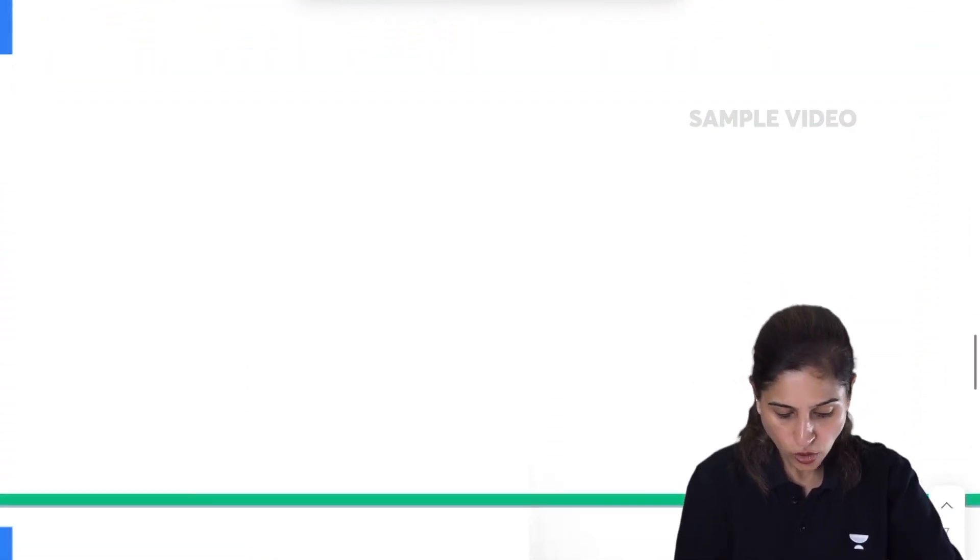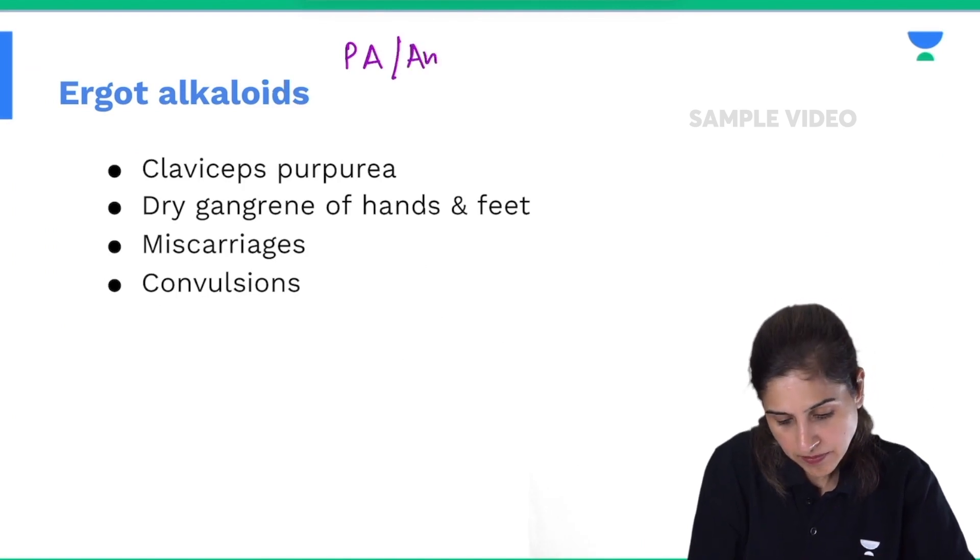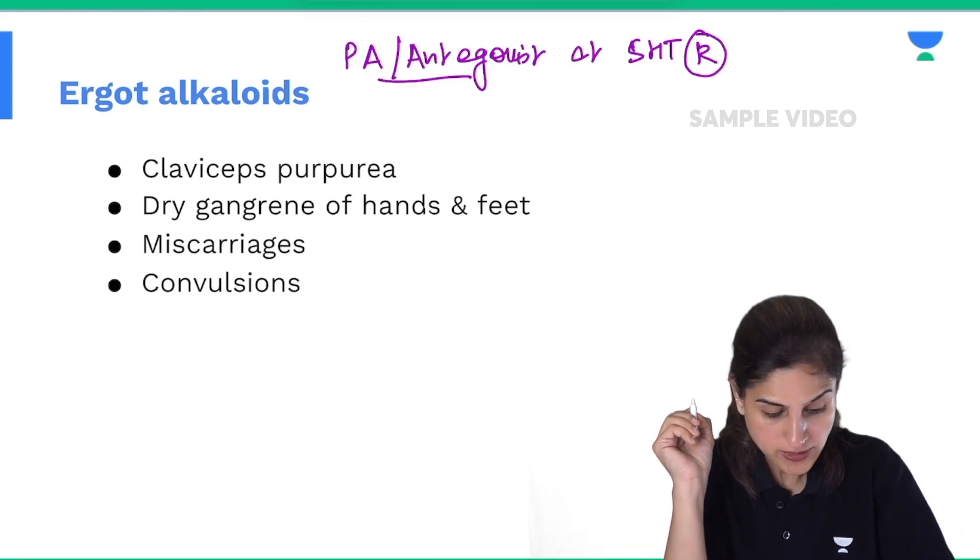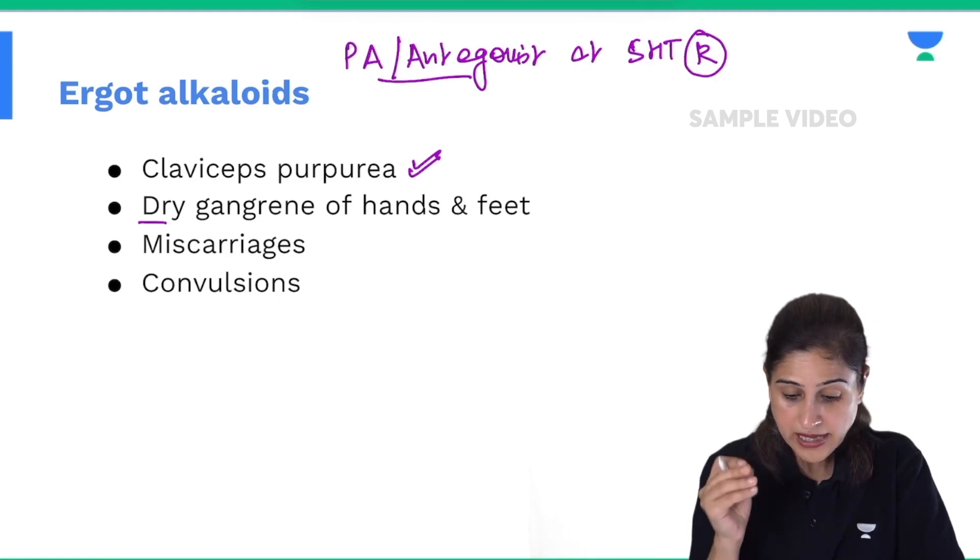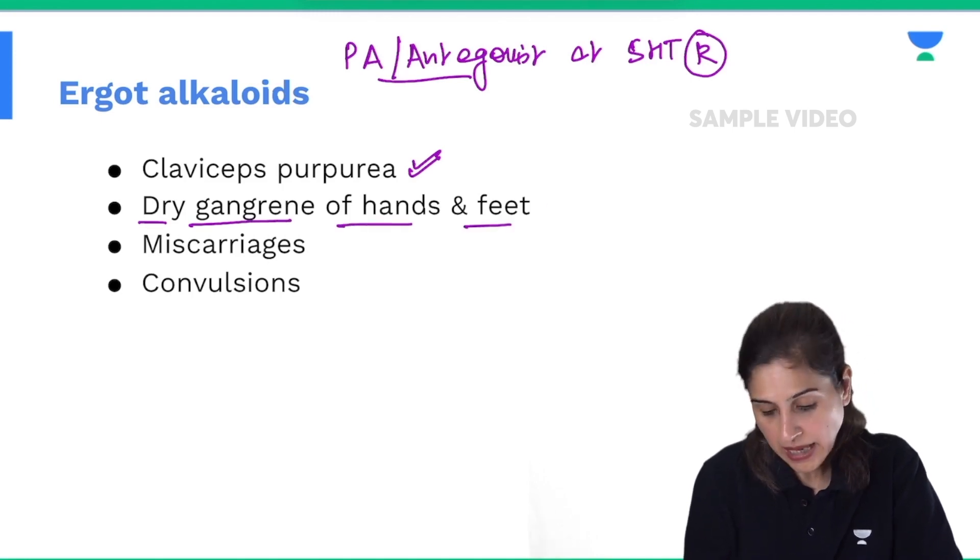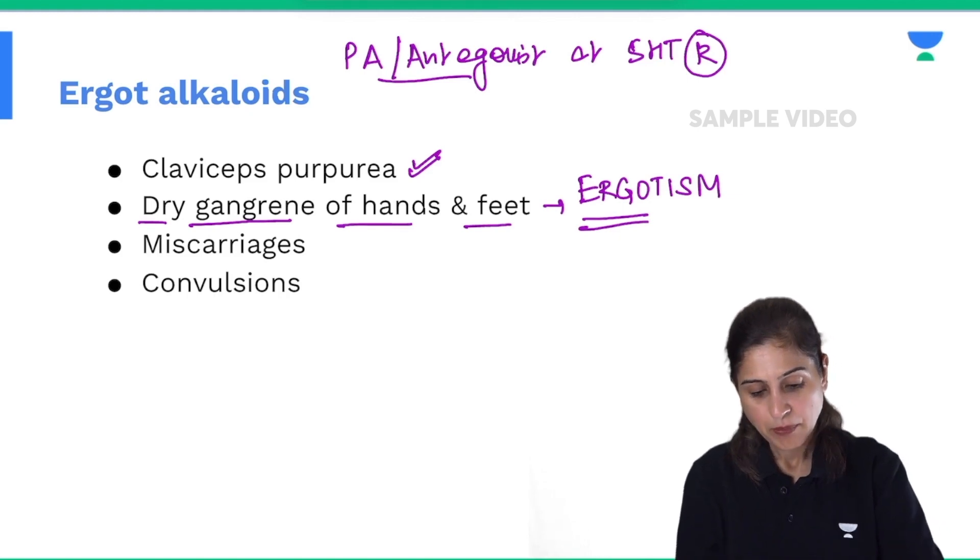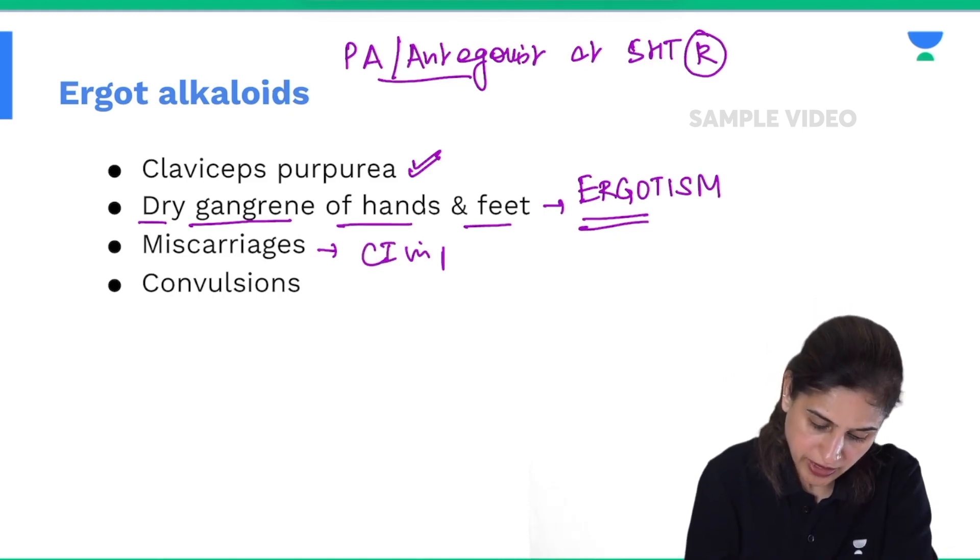Now the next we are going to talk about is ergot alkaloids. These are partial agonist-antagonist at 5-HT receptors. These are derived from Claviceps purpurea. Because they are very potent vasoconstrictors, they can cause dry gangrene of hands and feet, and this property is called ergotism. Because of these vasoconstrictive actions, they also lead to lot of miscarriages, so this is contraindicated in pregnancy. And they can cause even convulsions.